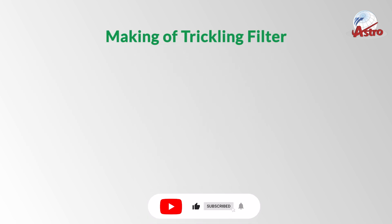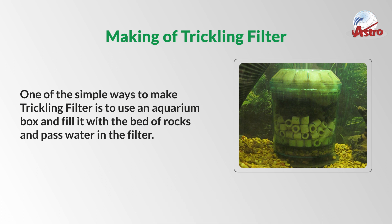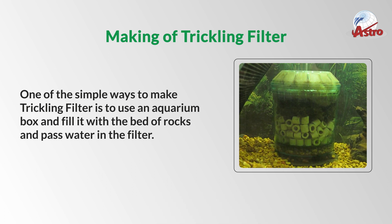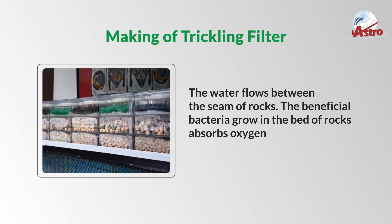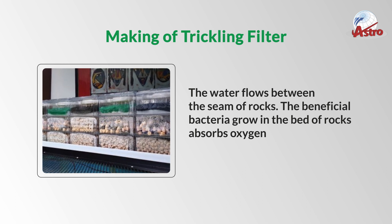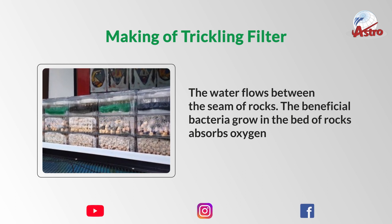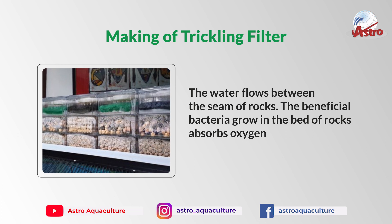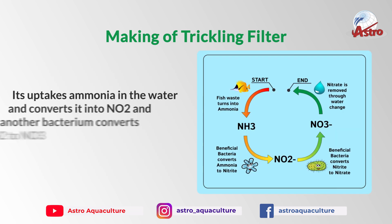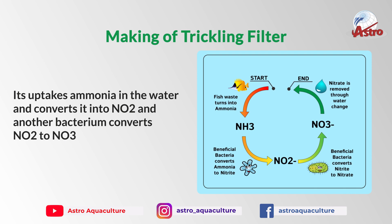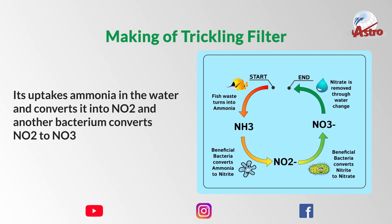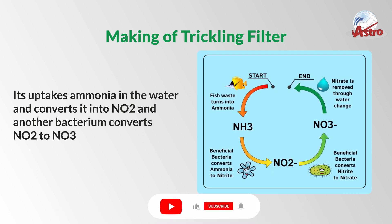One simple way to make a trickling filter is to use an aquarium box, fill it with a bed of rocks, and pass water through the filter. The water flows between the seams of rocks. Beneficial bacteria grow in the bed of rocks and absorb oxygen. They take up ammonia in the water and convert it into NO2, and another bacterium converts NO2 to NO3.